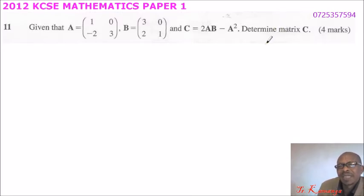You covered matrices in Form 3. You are taught how to multiply and how to square a matrix. So you just substitute and you say C equals 2 times matrix A (1, 0; -2, 3).